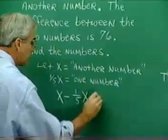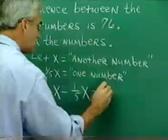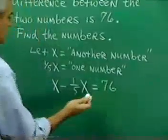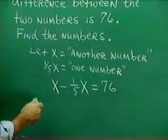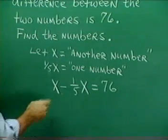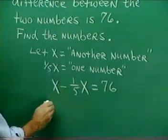One-fifth x and that difference is 76. Then we go through and solve this equation. Well we see a fraction in the equation. To clear the fraction we identify the common denominator 5 and multiply throughout by it.